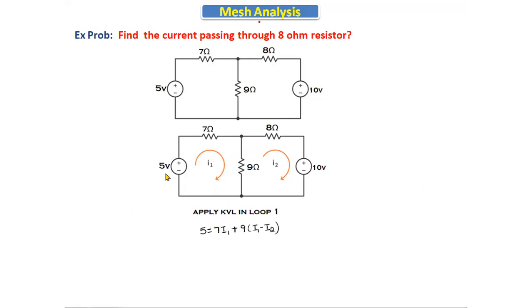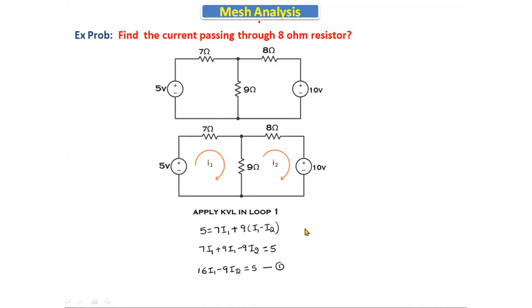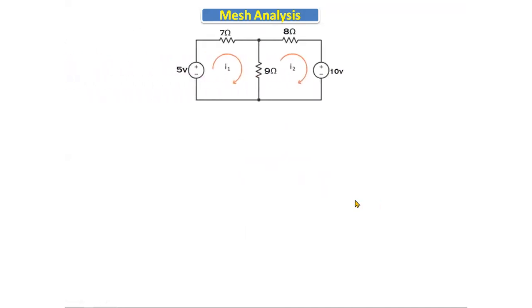Applying KVL in loop one, we get: 5 = 7·I1 + 9·(I1 - I2). Simplifying: 7·I1 + 9·I1 - 9·I2 = 5, so 16·I1 - 9·I2 = 5. This is equation number one.